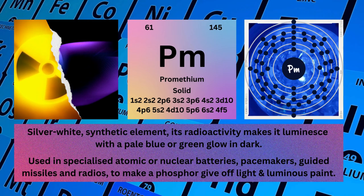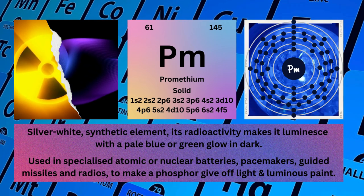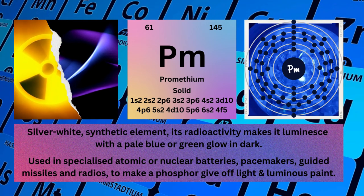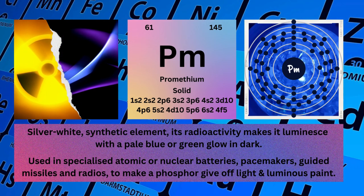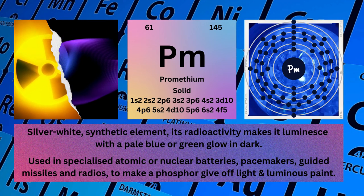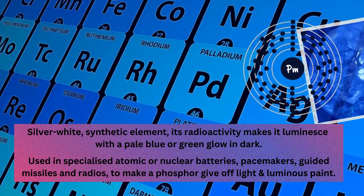Promethium is used in specialized atomic or nuclear batteries, pacemakers, guided missiles and radios, to make phosphors give off light and in luminous paint.